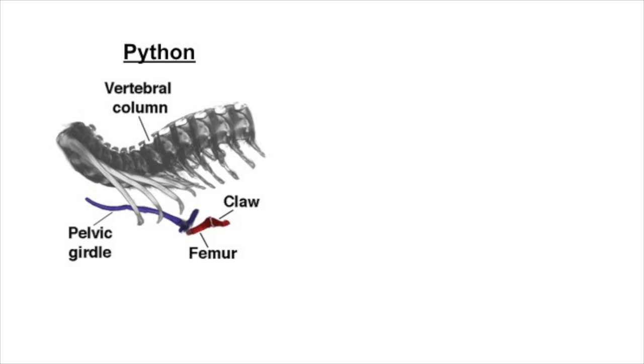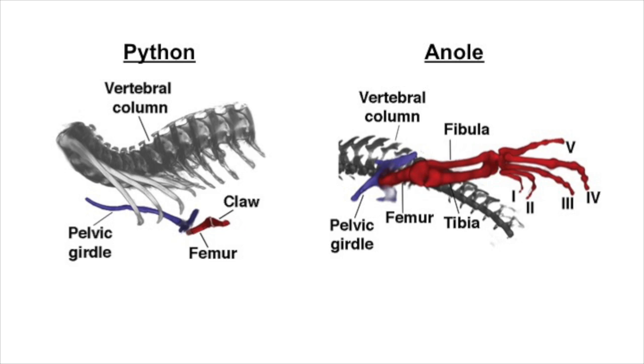So the question is, why does the python stop developing its leg after it's laid down just a femur and a piece of claw? Whereas in lizards, you see development of the femur, tibia, fibula, and the digits.